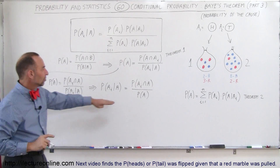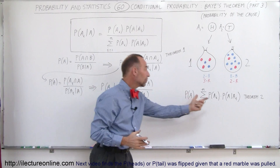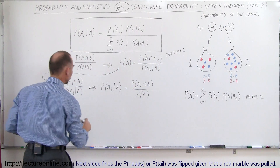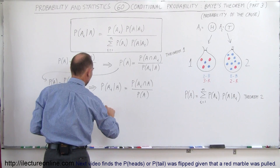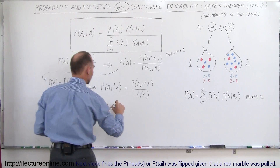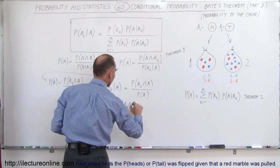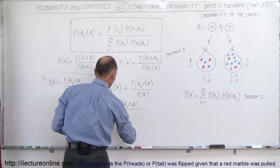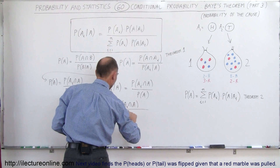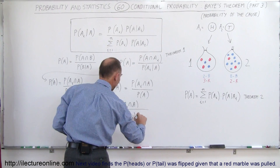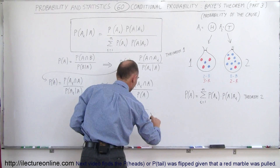You realize that P(A) can be written like this in general — if there's a set of independent events, we can write P(A) according to Theorem 2. That means the probability of A sub i occurring provided that A has occurred equals the probability of A sub i intersected with A, divided by the sum from i equals 1 to n of P(A sub i) times P(A | A sub i).